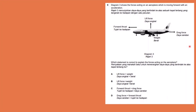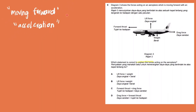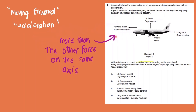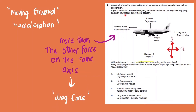To help understand balanced and unbalanced force, let's answer this question. The diagram shows forces acting on an aeroplane moving forward with an acceleration, and we need to identify which statement correctly explains the forces. The key hints are that the aeroplane is moving forward with an acceleration. There are two axes: the y-axis with lift force and weight, and the x-axis with forward thrust and drag force. For the aeroplane to accelerate forward, the forward thrust must be greater than the drag force, so the answer is C.